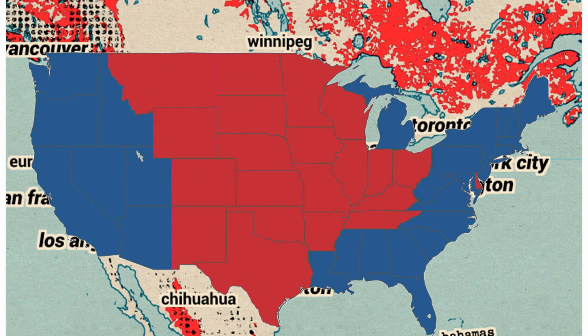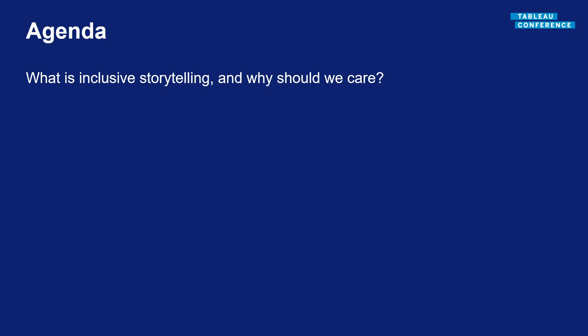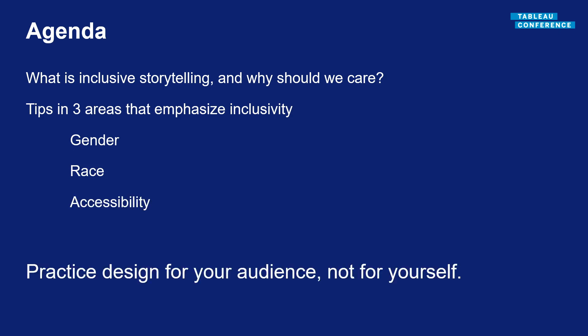This is actually a data story about the amount of farmland per state. But you might have made the assumption that this is about politics, because here in the US we use red and blue to talk about our different political parties. Your audience might be reading into your data stories without even anything on the screen to tell them otherwise. So what we're going to talk about today is what is inclusive data storytelling and why should we care. We're going to look at three areas: gender, race, and accessibility. The key idea is to practice design for your audience and not for yourself.